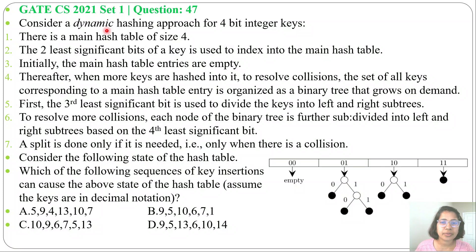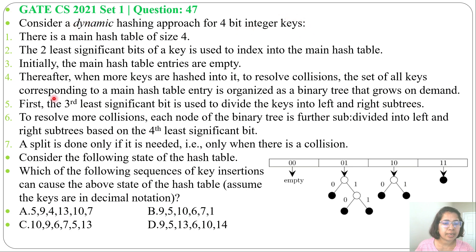Let's solve one previous question of hashing. This question was asked in GATE CS 2021 Set 1, Q47: Consider a dynamic hashing approach for 4-bit integer keys. The explanation of dynamic hashing is given as follows.